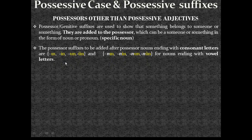The possessor suffixes to be added after possessor nouns ending with consonant letters are: ın, in, un, ün. Actually, we will also be covering the philosophy of how we added the possessor suffixes to the possessive adjectives — remember, apart from 'im' for first person singular and plural pronoun, I said that we were following the usual rule applicable to possessors other than pronouns. These are: ın, in, un, ün. So these are the possessor suffixes added to possessor nouns ending with consonant letters.